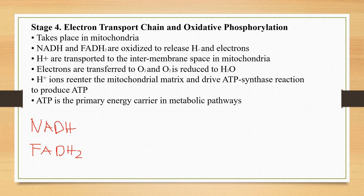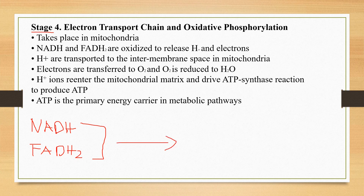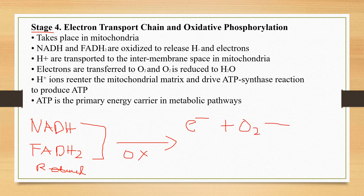As mentioned, these coenzymes are in the reduced form and they carry electrons and hydrogen ions. The electrons and hydrogen ions are temporarily stored by the nicotinamide adenine dinucleotide and the flavin adenine dinucleotide. In this stage, they undergo oxidation and release the electrons and hydrogen ions they had temporarily stored. The electrons that are released will eventually react with molecular oxygen to form water.